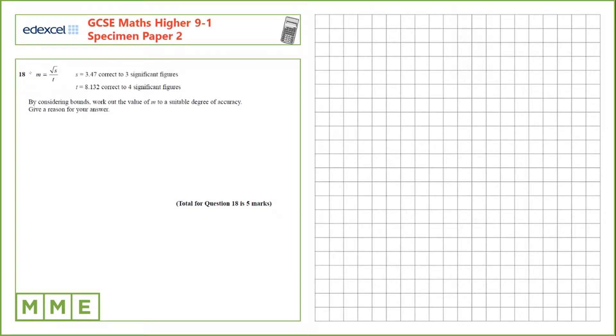Question 18. Given the formula here and two values, correct to three significant figures and four significant figures. By considering bounds, work out the value of m to a suitable degree of accuracy. Give a reason for your answer.